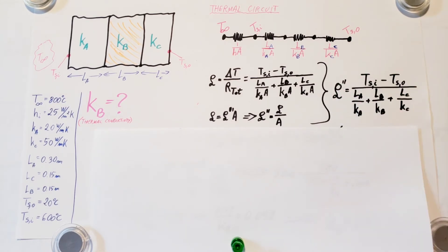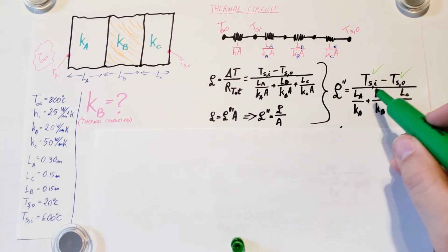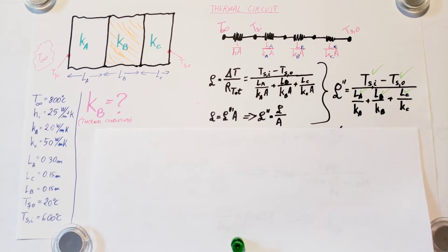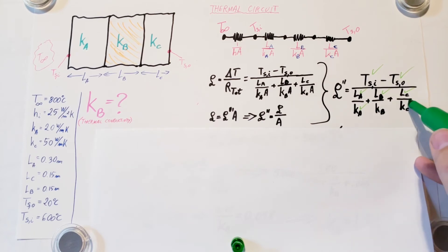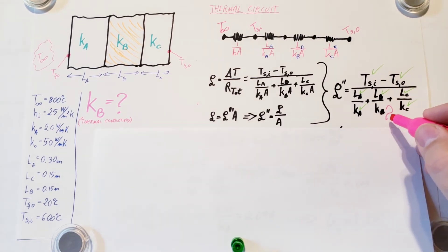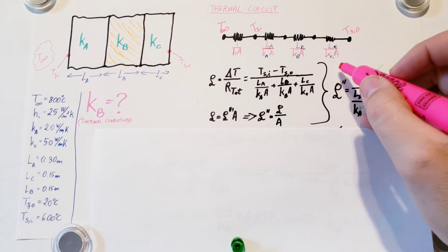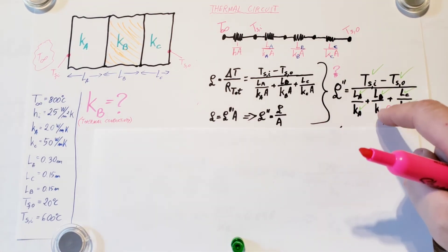Let's check what we have in our formula. The interior and exterior temperatures — we have those. The lengths LA, LB, and LC — we have all of those. The thermal conductivity of material A is given, and the conductivity of C is given. The conductivity of B is exactly what they want us to find — that's our big unknown. The flux is also still unknown, so we have two unknowns in this equation and cannot solve it yet.